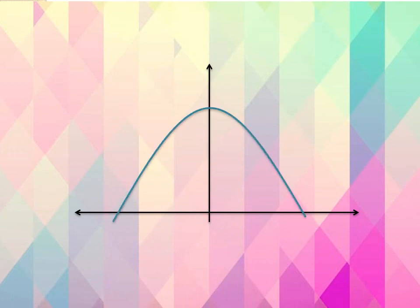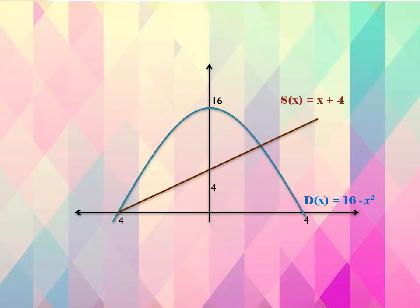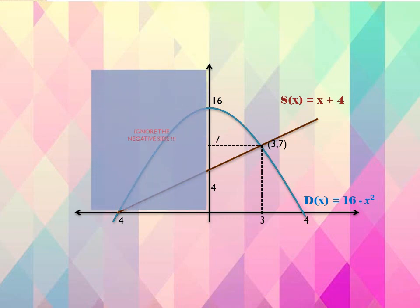Draw the X and Y axes. The demand function, which represents a downward-opening curve, has two X-intercept values when factorized: X equals 4 and X equals negative 4. The value 16 is the Y-intercept. The linear supply function has an upward-sloping graph intersecting the Y-axis at Y equals 4 and the X-axis at X equals negative 4. The intersection point between the two functions — the market equilibrium point — is at (3, 7). Ignore the negative side of the graph.